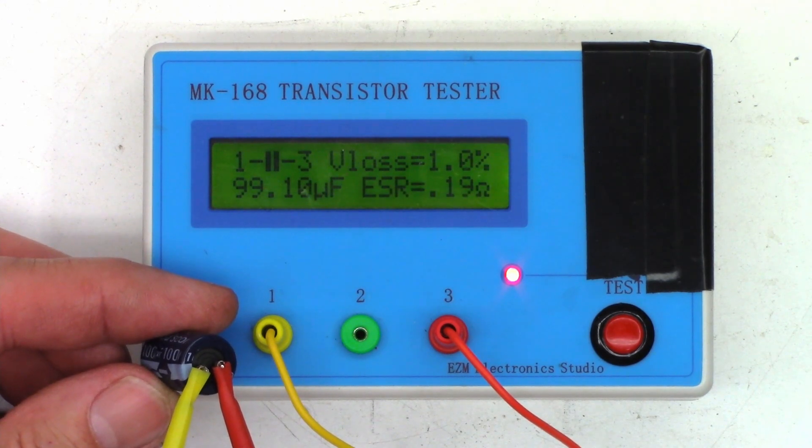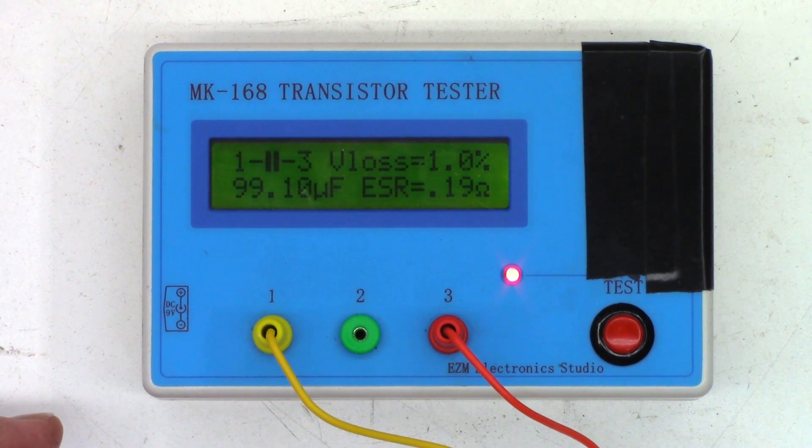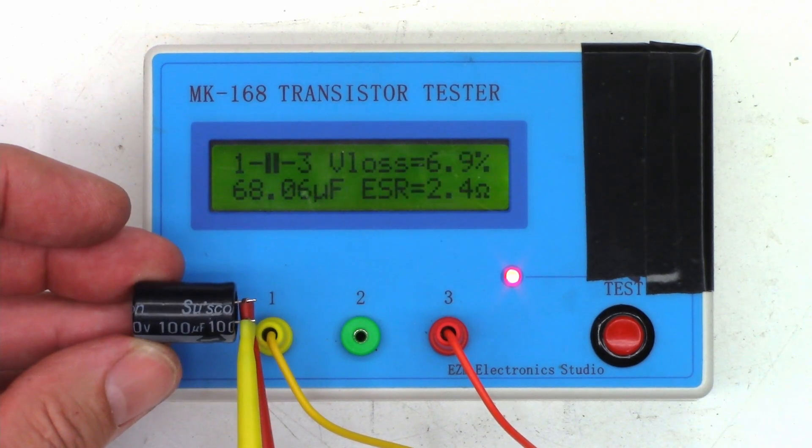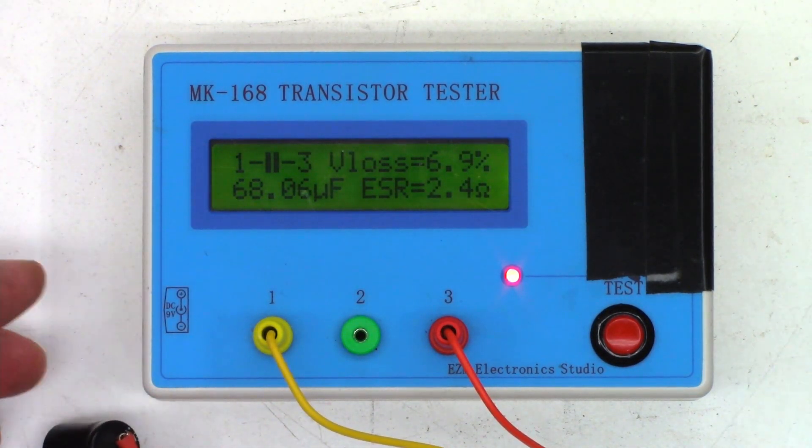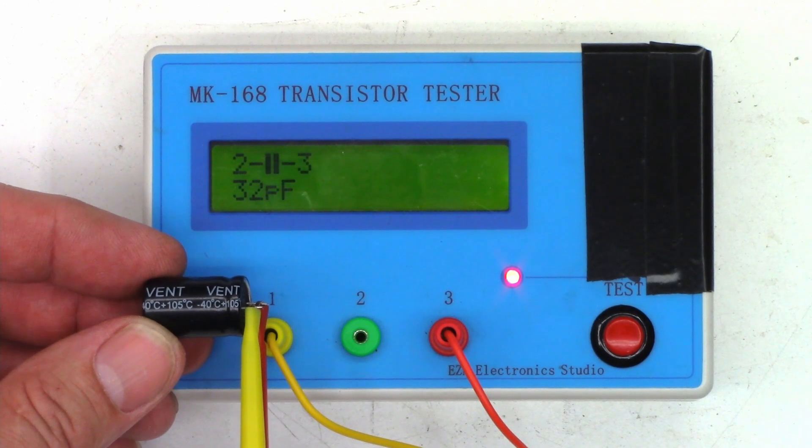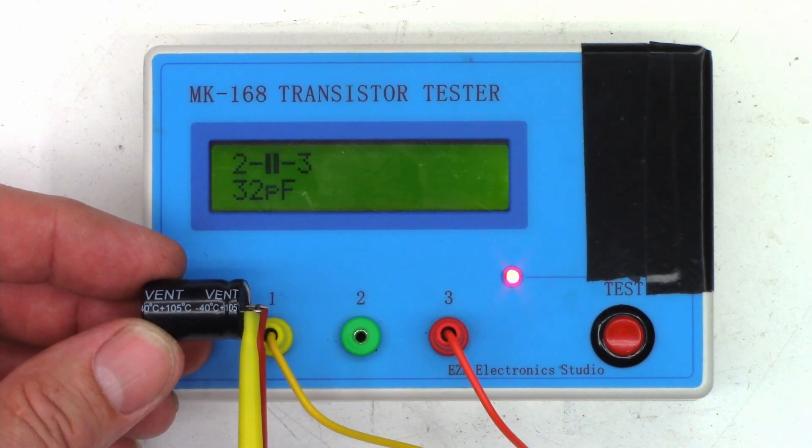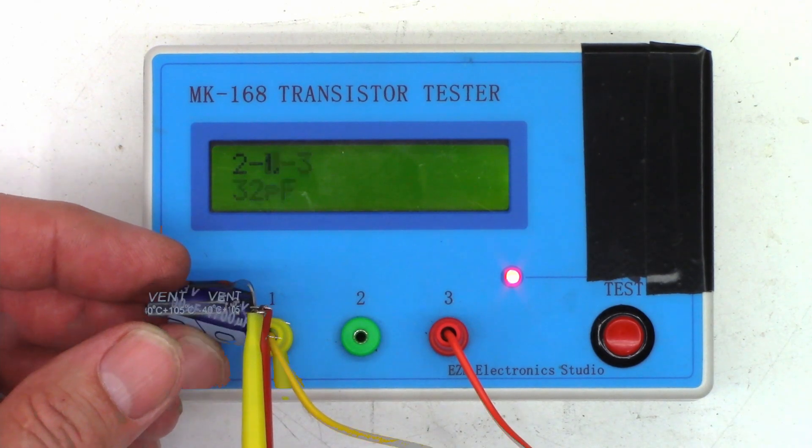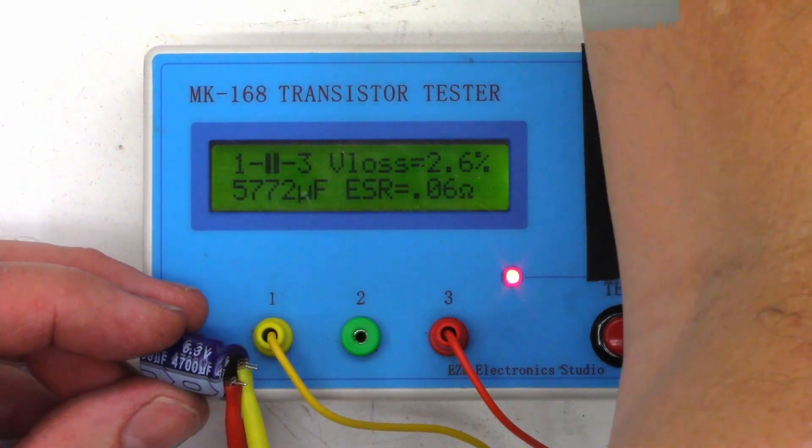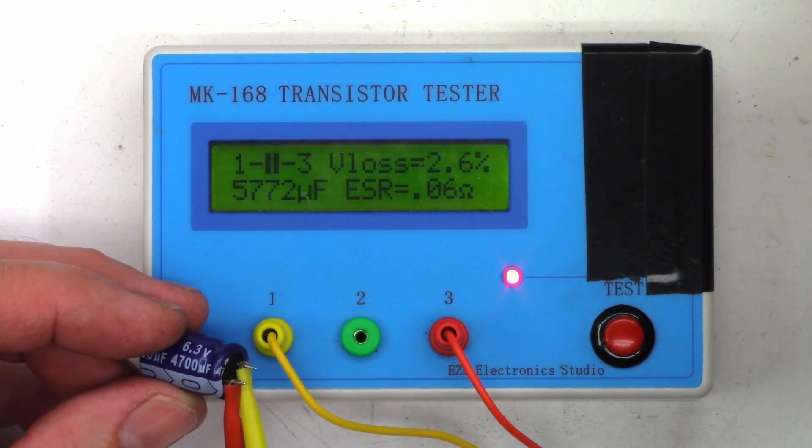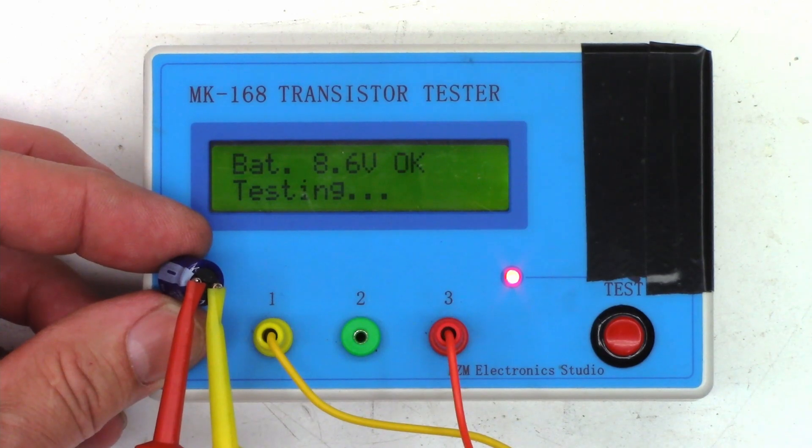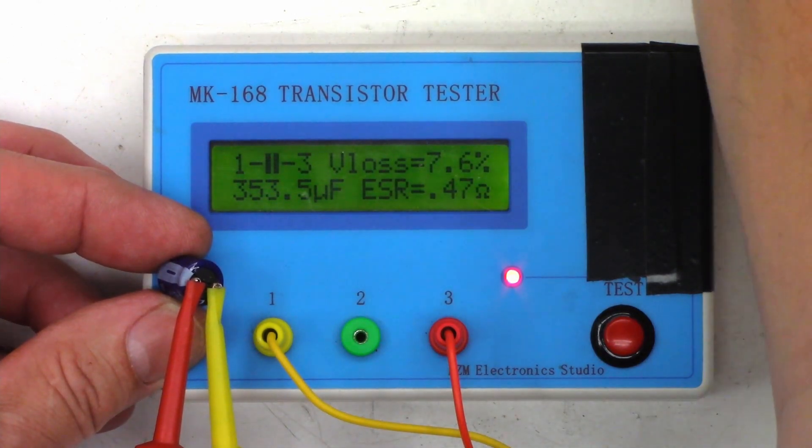All right, on to the MK168 next. All right, here we go. First Suscon 100 at 100: 99.1 microfarads, ESR of 0.19 and a V loss of one percent. On to the second Suscon: 68 microfarads, ESR 2.4, and a V loss of 6.9. Okay, on to the third Suscon 100 at 100. Wow, it reads 32 picofarads. The other ones were reading 7.9 and 11 ohms.